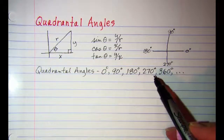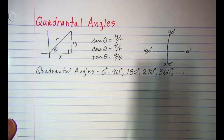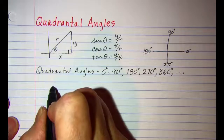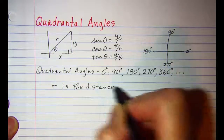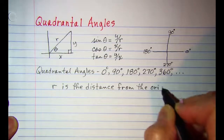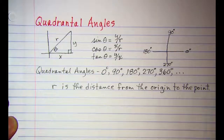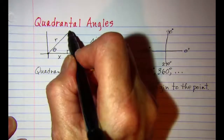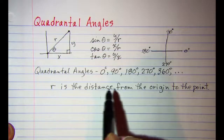Now if we have a Quadrantal Angle, you can see that we can't draw a triangle because it's flat. So we have to think of our trig functions a little bit differently. What we'll do is think of r as the distance from the origin to the point. That works with our right triangles — r is the distance from the origin to the point at the end of the vector. So for Quadrantal Angles, we have to use that because we don't have a right triangle.